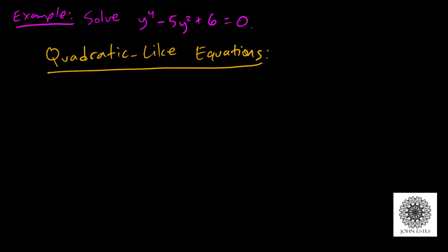A quadratic-like equation is one that looks like this: A times some quantity squared, plus B times that same something, plus C equals 0. If you look at it that way and put X's in the boxes, you see that this is a quadratic equation. I'm going to take out the X and put something else in that box — and my claim is that the example we just saw works that way.